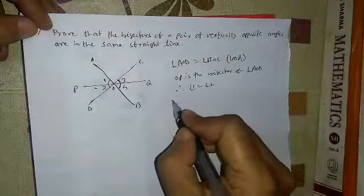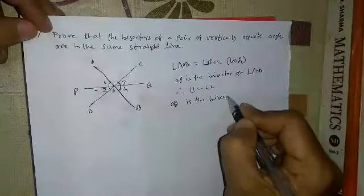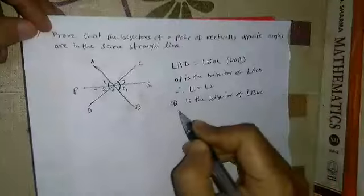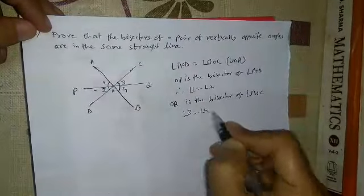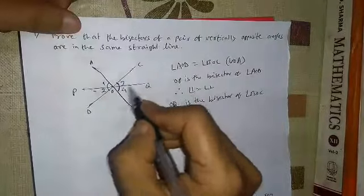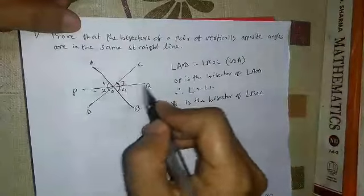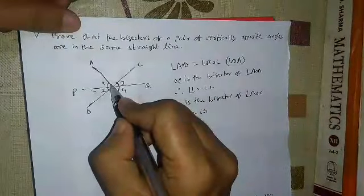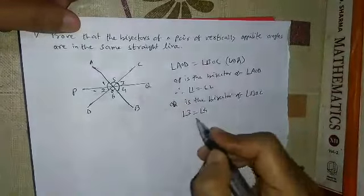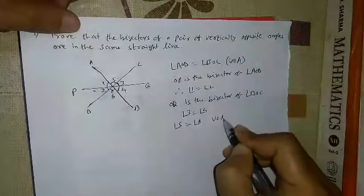AO is the bisector of angle BOD. So angle 3 equals angle 4. Here we have vertical opposite angles — angle 5 equals angle 6. These are vertical opposite angles.